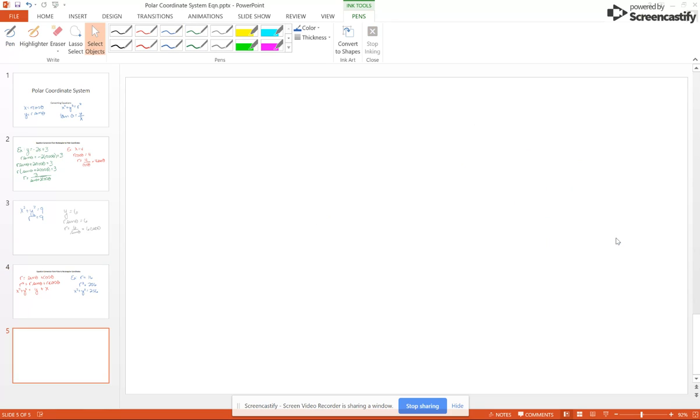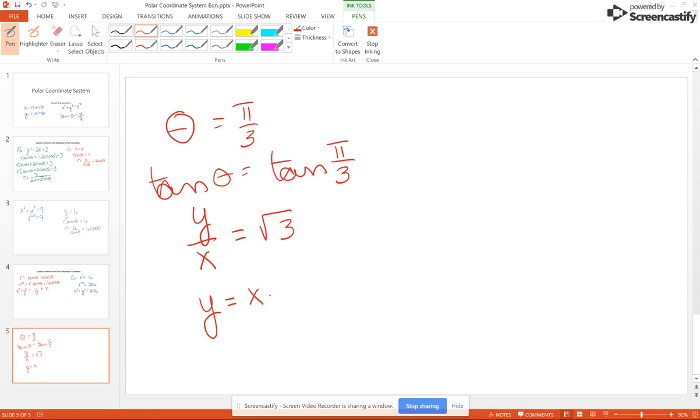Finally, what if you had theta equals, say, pi over 3? Then you're going to take the tangent of both sides. Tangent of theta equals tangent pi over 3. Tangent of pi over 3 is the square root of 3. You could leave it like this, or you could solve for Y – it depends on your instructor. So Y equals X times square root of 3.